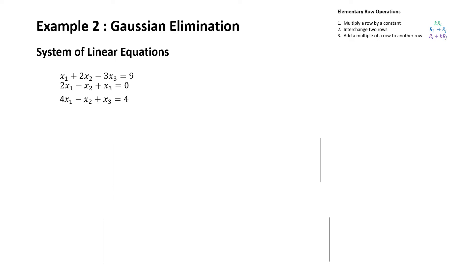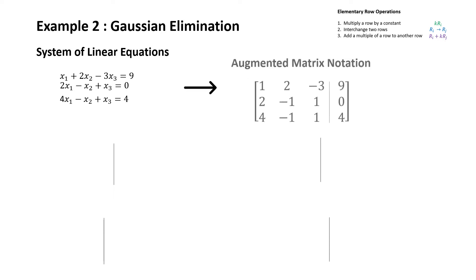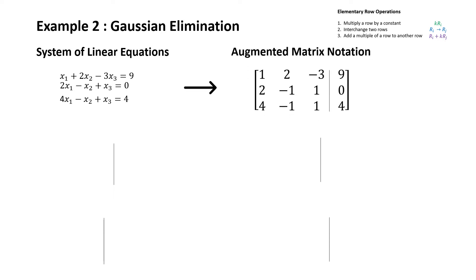The first step is to write this system of linear equations in augmented matrix notation — we have discussed this process in great depth in a previous video, please see the link in the description. The next step is to work column by column using the pivoting method to transform each column and transform this matrix into row echelon form.